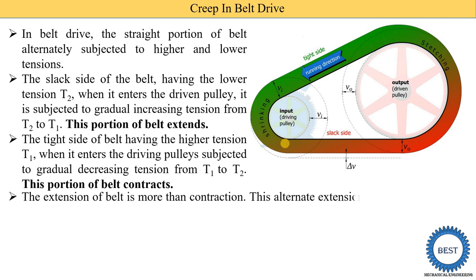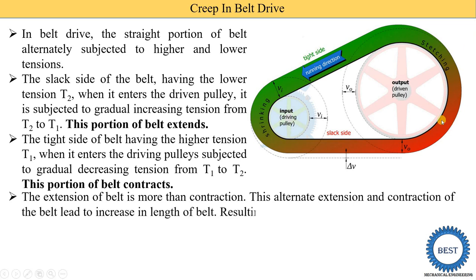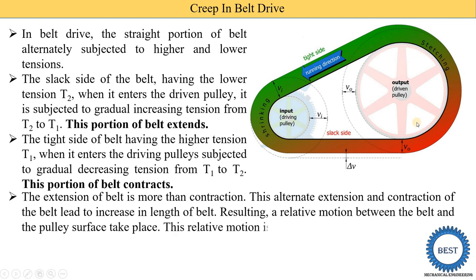The extension of the belt is more than the contraction — when the belt passes from the driven pulley, more extension takes place compared to the contraction, which is smaller. This alternate extension and contraction of the belt leads to increasing the length of the belt, so the length of the belt increases after long use of the belt drive.